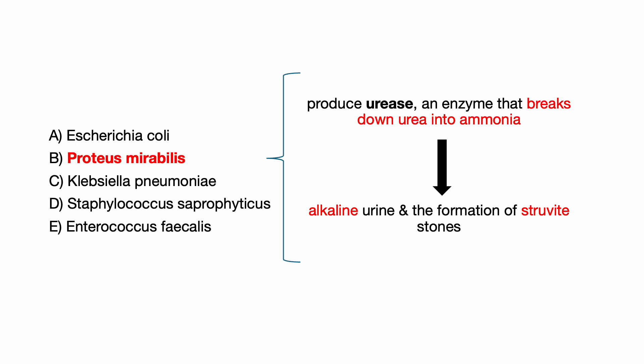If you answered B, Proteus, then you are correct. Proteus mirabilis is a common cause of UTI, particularly in patients with recurrent infections. It is known for its ability to produce urease, an enzyme that breaks down urea into ammonia, leading to alkaline urine and formation of struvite stones. This patient's alkaline urine of pH 8.5 and history of recurrent UTIs suggests an infection caused by a urease-producing organism like Proteus. The foul-smelling, cloudy urine and alkaline pH are characteristic features of this organism's infection.